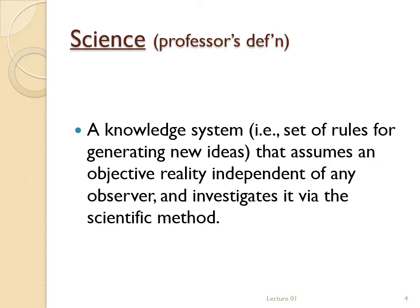All knowledge systems make assumptions. In mathematics, those assumptions are called axioms; in religion, they're called articles of faith. Science makes the assumption that there is something to learn about — that there's something out there, outside of yourself, and it is true or false whether you agree or not. Other knowledge systems are much more subjective, where whether an idea is true or not depends on who's asking.